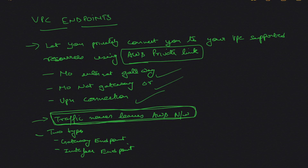There are two types of endpoints. The first one is the gateway endpoint, which we'll see in this video. The second one is the interface endpoint — we'll talk about interface endpoints and PrivateLink in the next video.